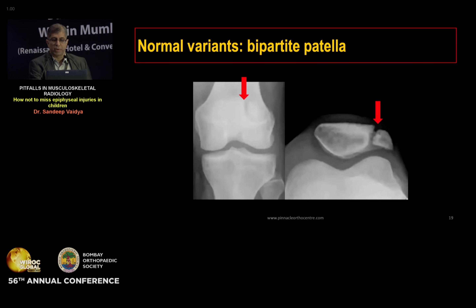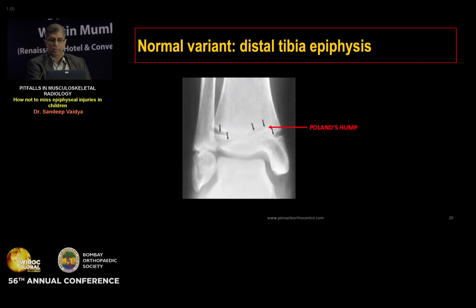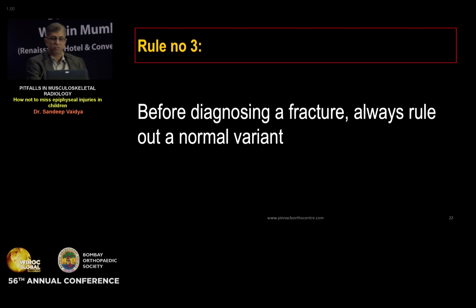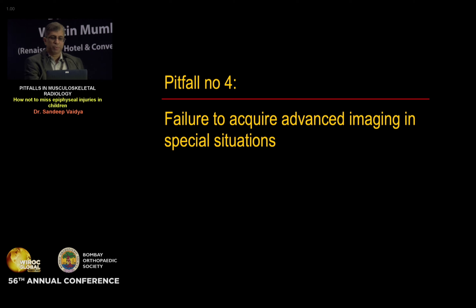Another normal variant is bipartite patella, occurring along the superior lateral border of the patella — a very rare location for a fracture — with a smooth border that differentiates it from a fracture. In the distal tibial physis, an irregularity known as the bony hump near the medial border — also called Poland's hump or Chem's hump — is often misdiagnosed as a fracture. The ossification centers of the olecranon, radial head, and trochlea often ossify via multiple small ossific nuclei that coalesce, and failure to recognize this can lead to a mistaken fracture diagnosis. Rule number three: whenever you diagnose a physeal fracture, always rule out a normal variant.